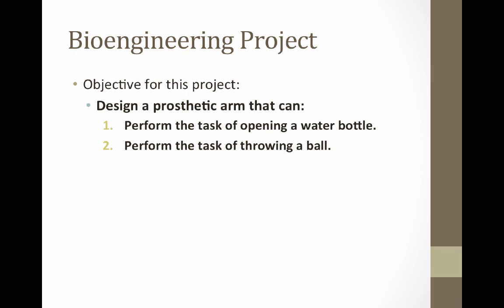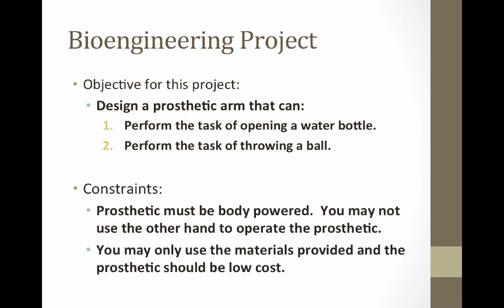For your bioengineering project, here is your objective: you will be designing a prosthetic arm that can perform two tasks. The first is to open a water bottle, lift it, take a drink, put it down, and recap it. The second task will be to throw a ball at a target. You'll have a couple of constraints: the prosthetic you design must be body powered — no batteries, no motors. If the hand opens and closes, it must be performed using parts of the user's body. You may not use the other hand to operate the prosthetic.